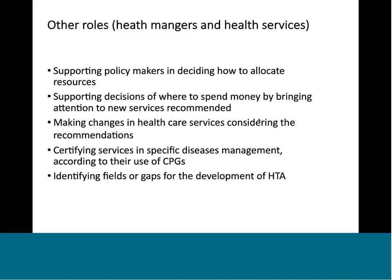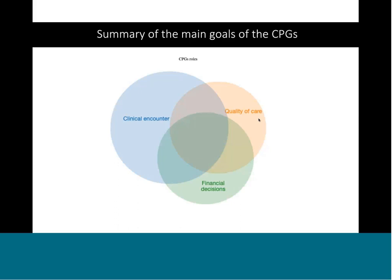In summary: the main goal of guidelines is, of course, the clinical encounter — the most important focus — but depending on the healthcare system, the funder, or who is using the guideline, there could be uses in additional roles. The two major additional roles — beyond the clinical encounter decision — are all the decisions to improve the quality of care at different levels of the healthcare system, and financial decisions. These are closely interrelated because decisions at the quality of care level and financial decisions could have an impact on clinical encounter decisions and vice versa.